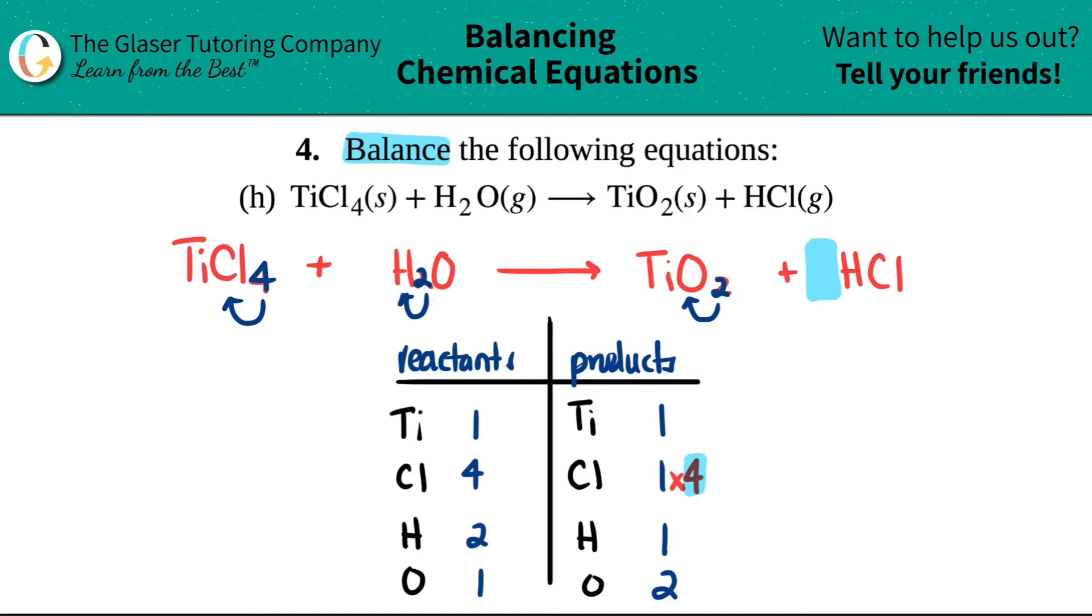So here I know that I'm going to put a four here. But you got to be fair. All the coefficients get multiplied by all the elements in that compound. So how many Hydrogens do I have now? Oh, I have four Hydrogens. So I have to change that number. And now how many Chlorines do I have? Oh, now I have the four, which is what I wanted. So the Chlorines are balanced.